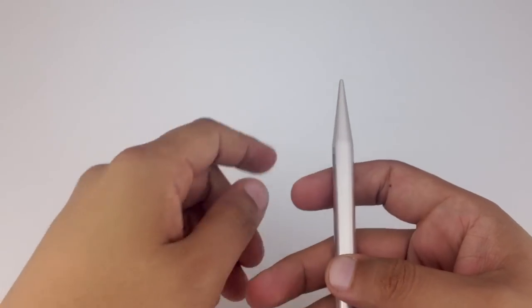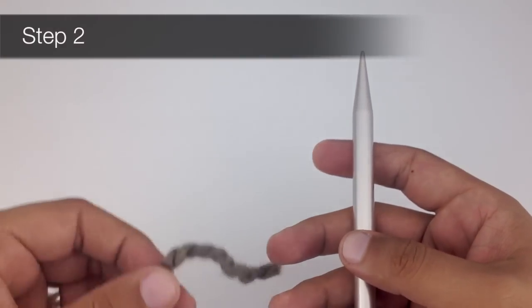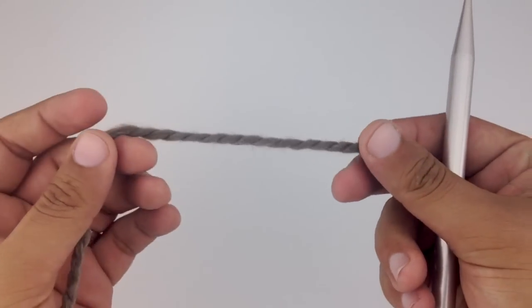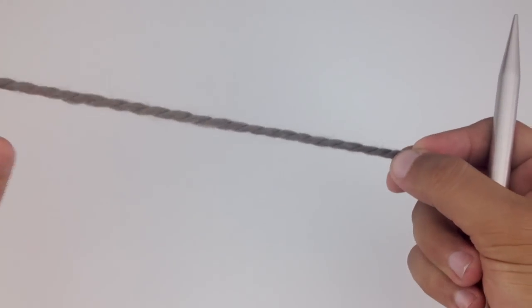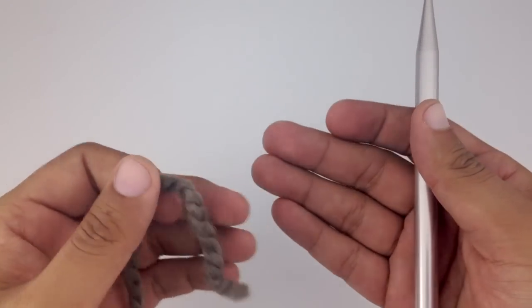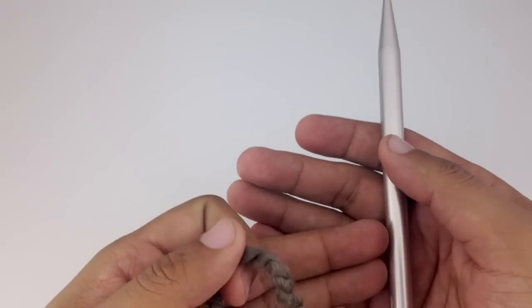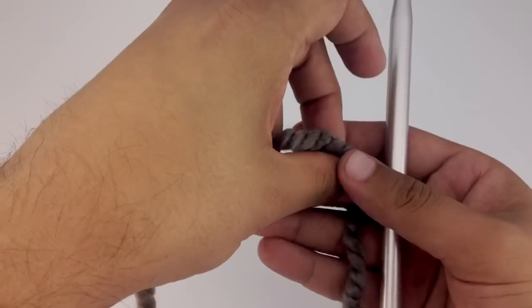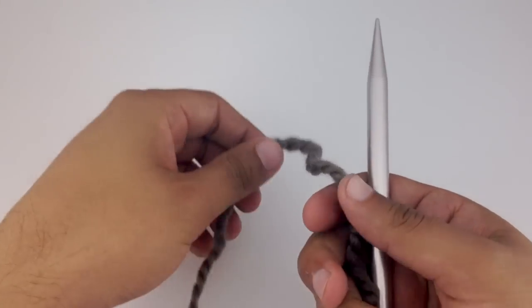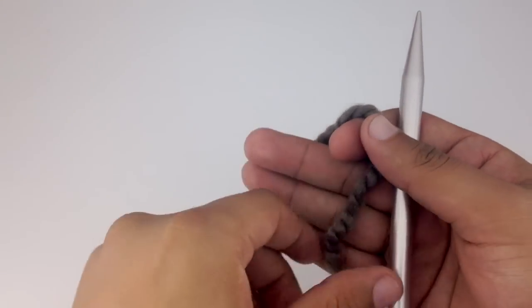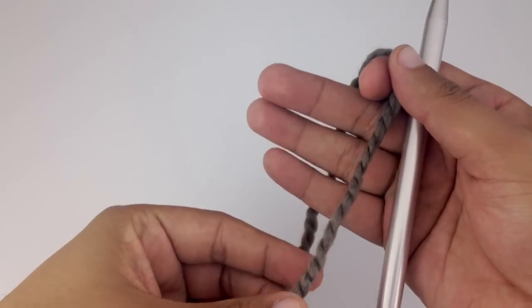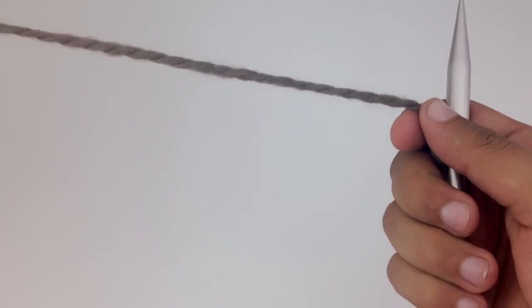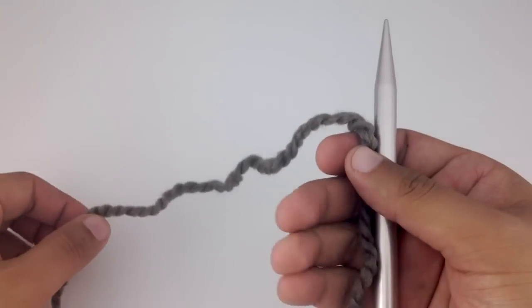For step two, we're going to take the tail end of our yarn—that's one of the loose ends—and we want to hold that in our dominant hand parallel to our knitting needle. We want the tail of the yarn to be going the opposite direction of the tip of our needle, so that will be going down, and then the rest of this working yarn will be connecting to our ball of yarn.